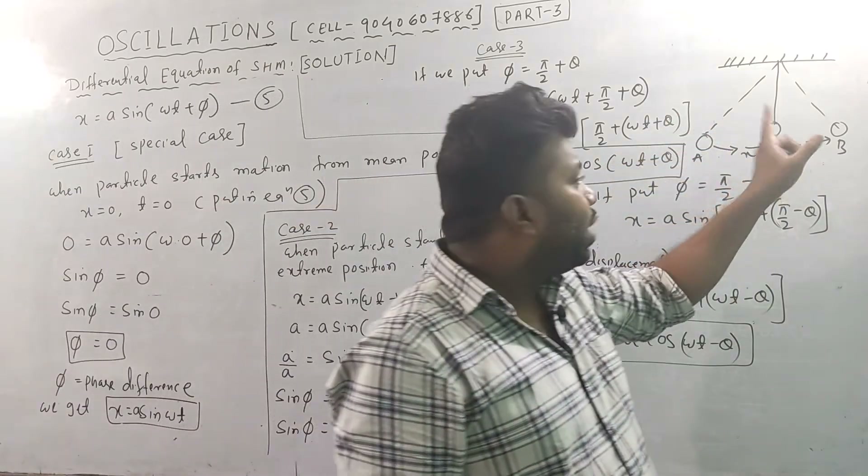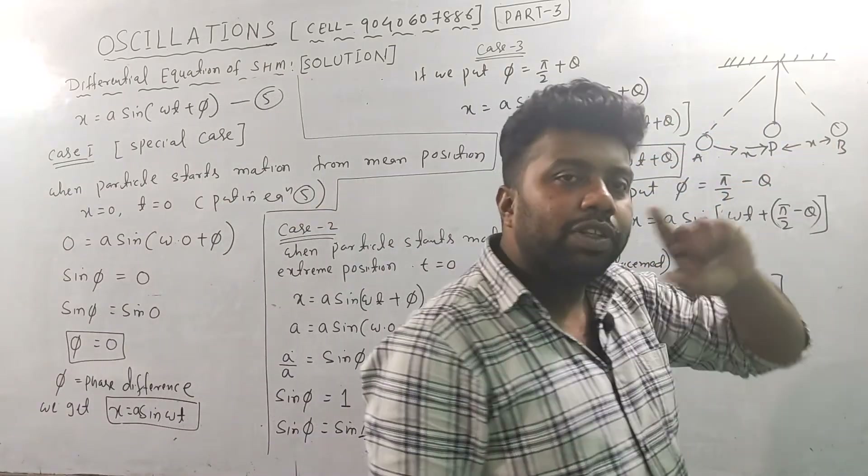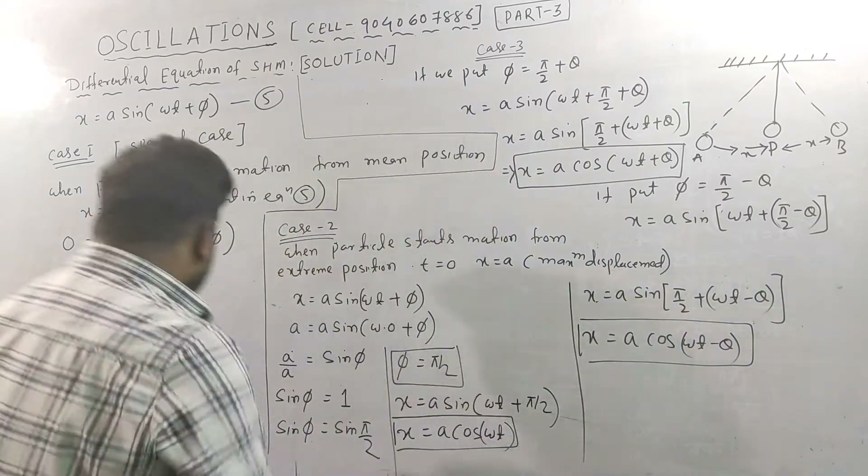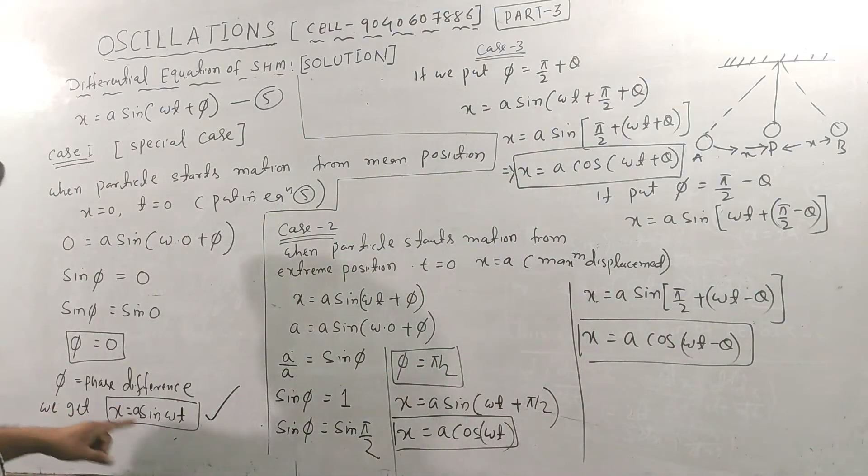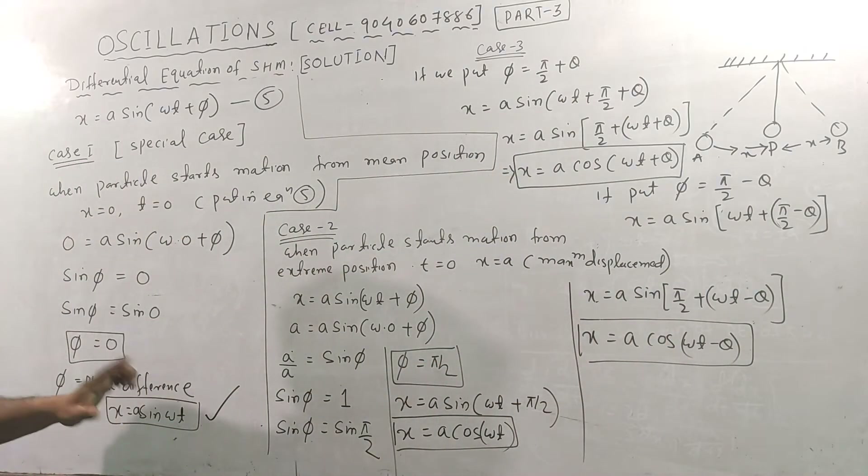So the first special case gives us x = A sin(ωt), with phase difference φ = 0.